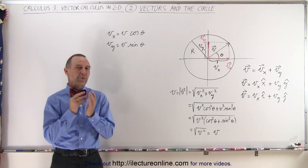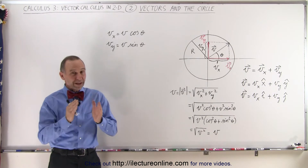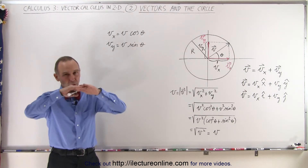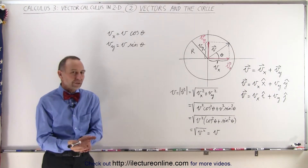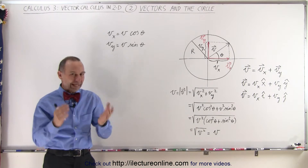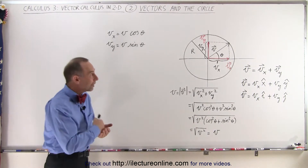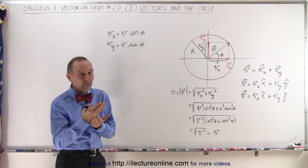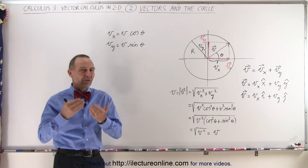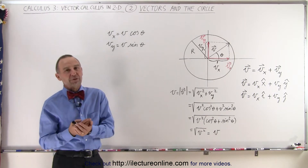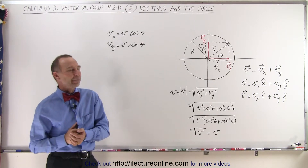We want to make a closer relationship between the concept of a vector, the circle that encompasses the vector — and it doesn't have to be the unit circle, it can be any circle of radius r — and the relationship between the x and the y components of the vector and the trigonometric functions, the cosine and the sine.